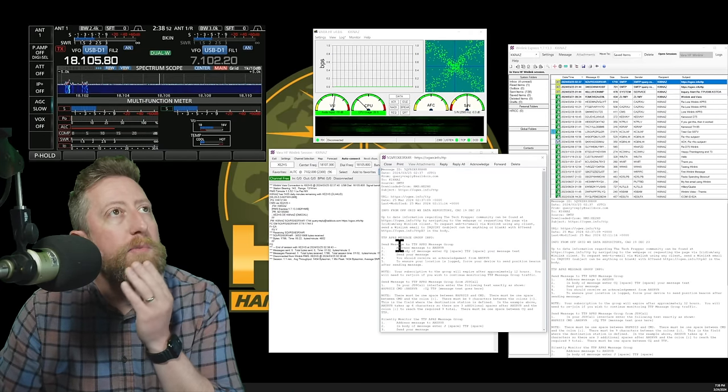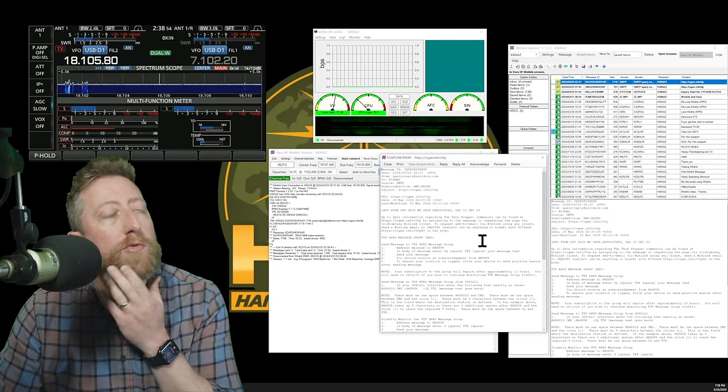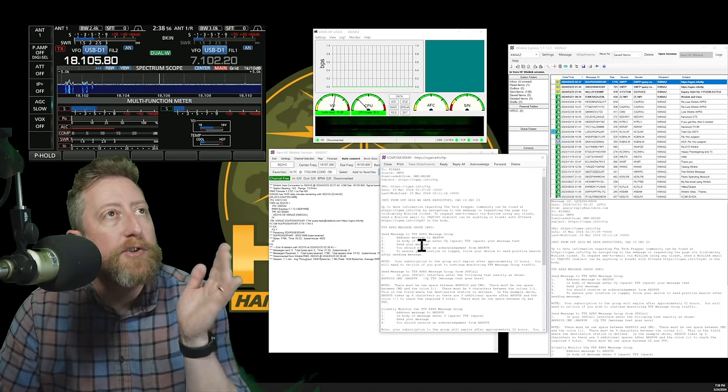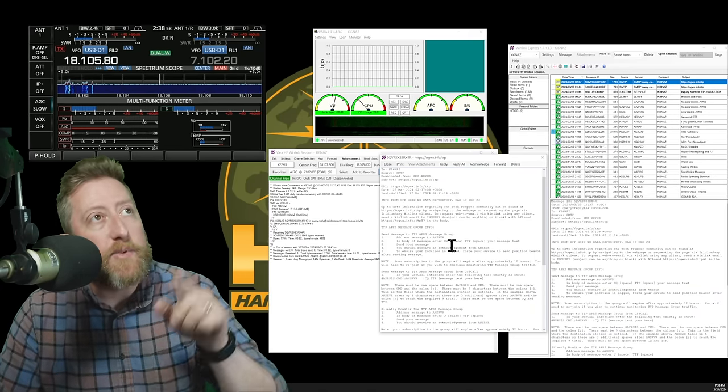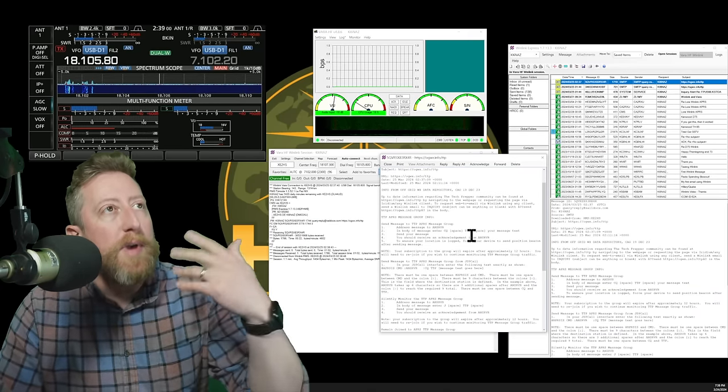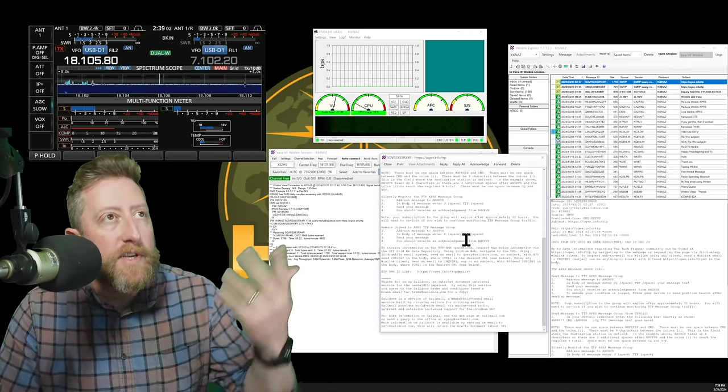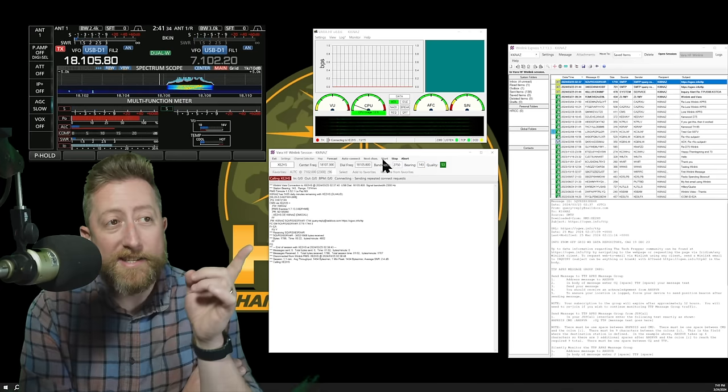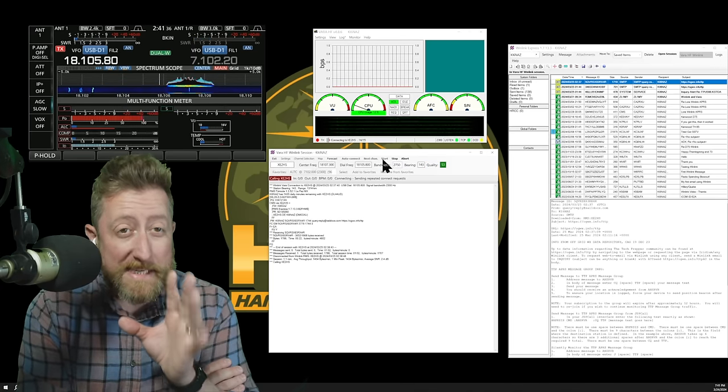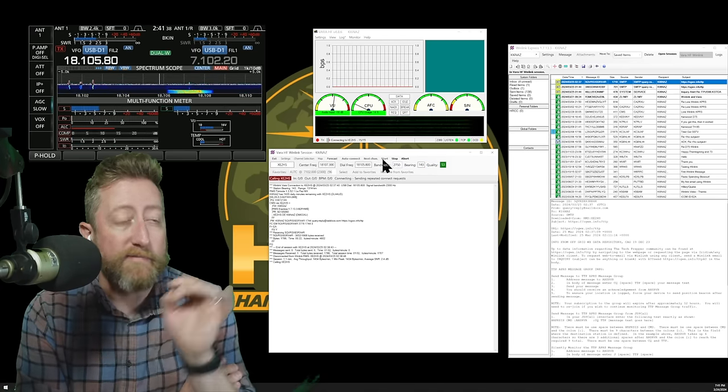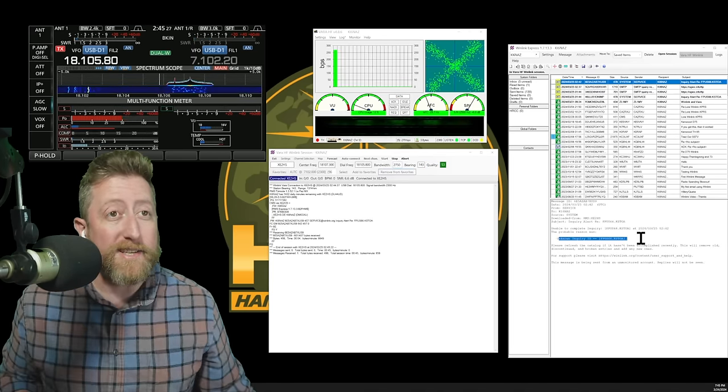Info from off-grid repository, up-to-date information, TPP APRS message group info, send message to TPP APRS message group. And then it runs through the whole instructions of what you need to do. So that did work. FYI, that station that I was making contact with was 1,300 kilometers away from my home station. That's pretty good. It's working as expected.